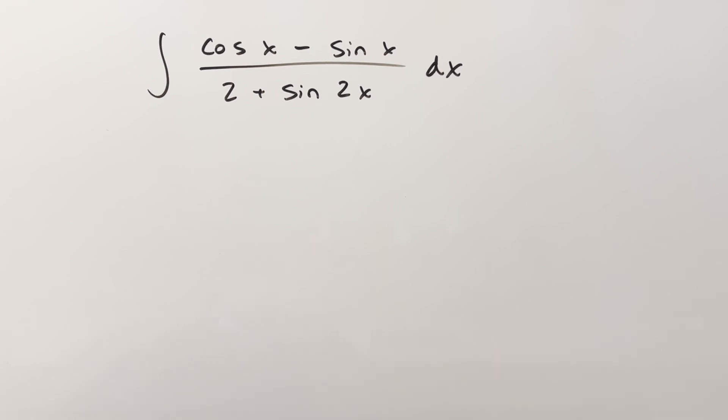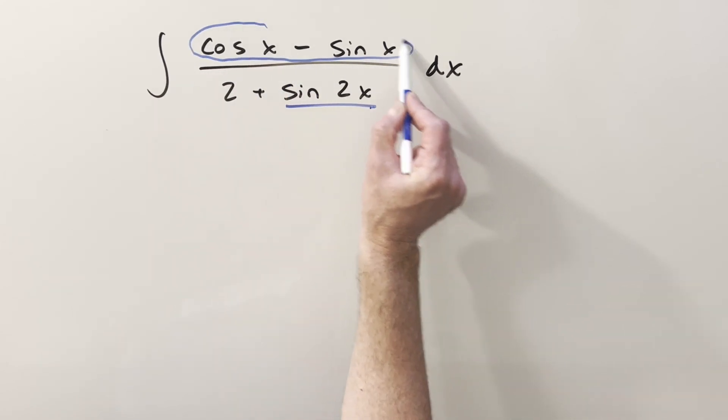This is the kind of problem that comes up a lot. We notice the thing that's happening here is when we have, it's always with sine 2x, and then the numerator is cosine x minus sine x, or it could be cosine x plus sine x. What we want on this is to do a u substitution.